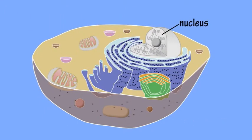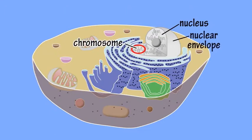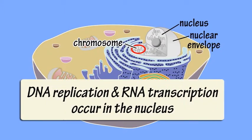The cell nucleus is a spherical organelle within the cell, visible under a microscope. It contains the cell's chromosomes and is surrounded by a double membrane called the nuclear envelope. DNA replication and RNA transcription occur in the nucleus.